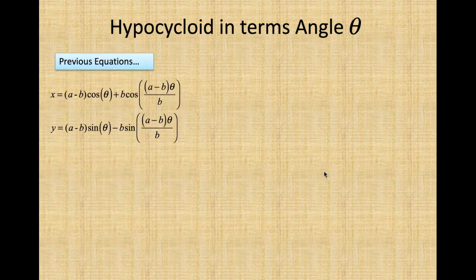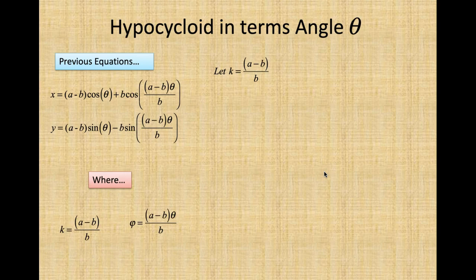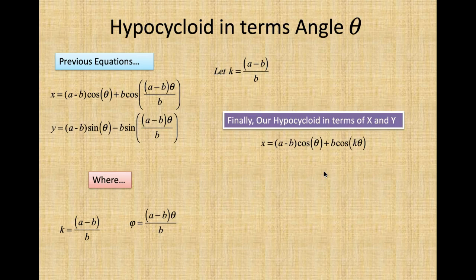Let's continue. Here's our previous equation. Let's let K equal (A minus B) divided by B. Where K is equal (A minus B) divided by B, and phi is equal to (A minus B) divided by B theta. Well, we substitute K into there.